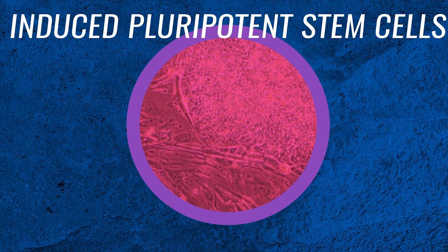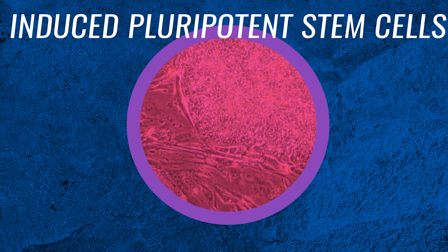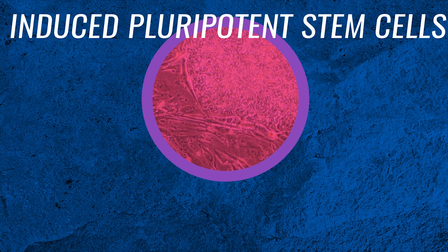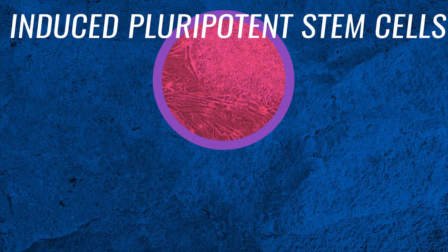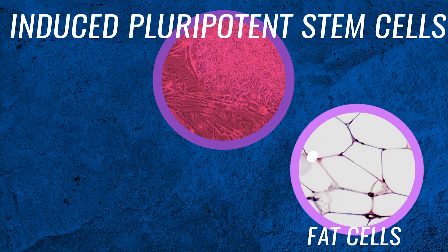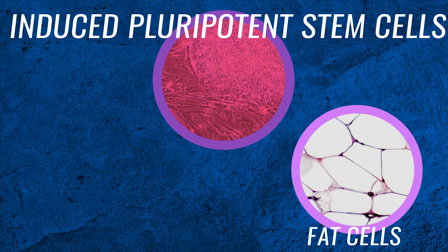Induced pluripotent stem cells are also an option. Here, a specific set of genes is artificially activated in a cell, like a fat cell, and this turns the cell into a pluripotent stem cell. It's really a fascinating topic and absolutely deserves a video of its own.